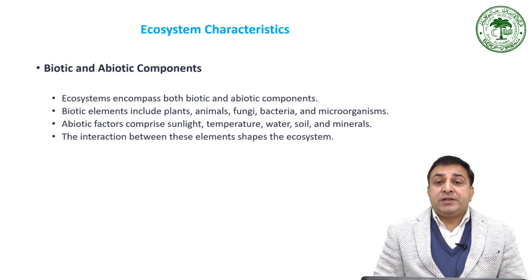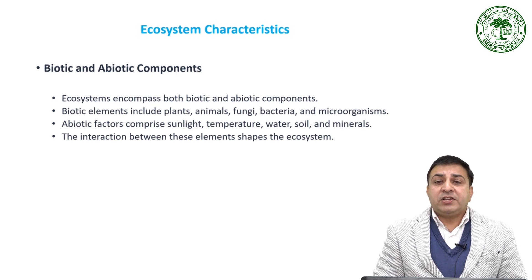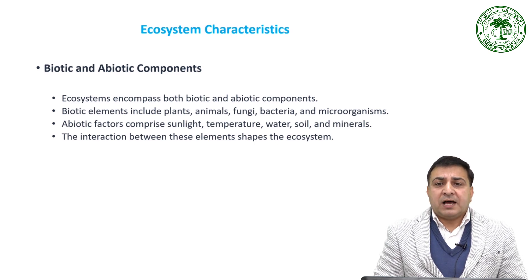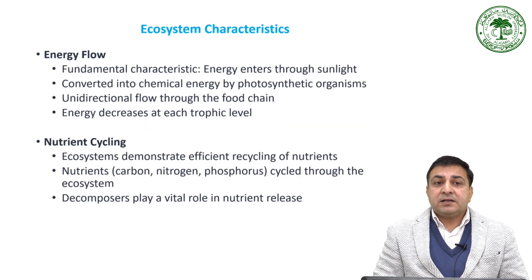Biotic elements include plants, animals, fungi, bacteria, and other organisms. Abiotic factors comprise the physical and chemical components such as sunlight, temperature, water, soil, and minerals. The interactions between these elements actually shape the ecosystem.